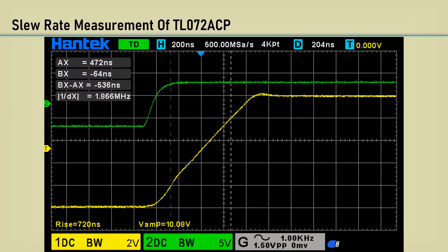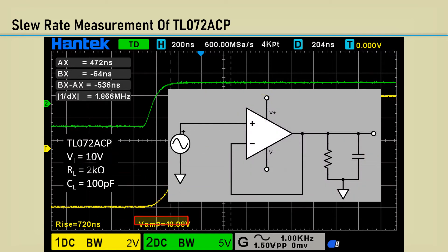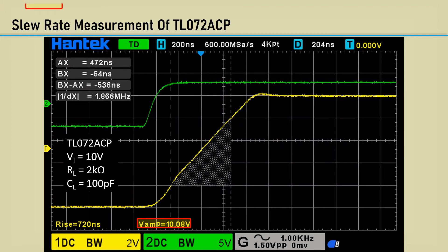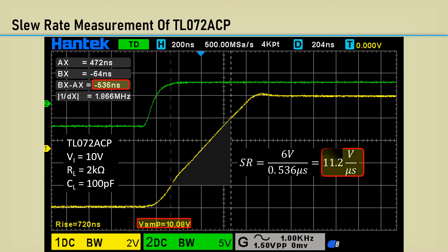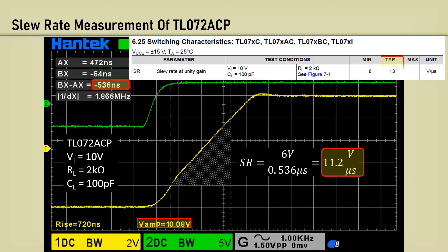I tested the slew rate of the TL072 ACP in a voltage follower configuration under the test conditions in the datasheet: a 10-volt step, a 2K load resistor, and a 100 pF load capacitor. The slope triangle between the cursors spans a 6-volt change in voltage, and the cursor shows a delta-T of 536 nanoseconds. The slew rate comes out to 11.2 volts per microsecond. The spec is 13 typical with a minimum of 8 volts per microsecond.